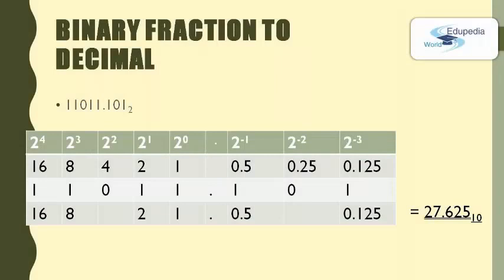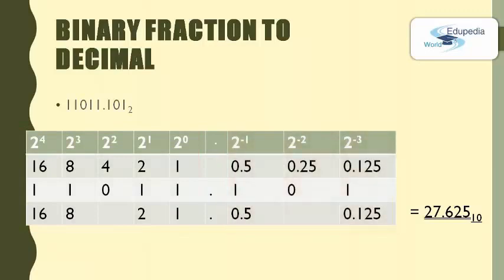Here is another binary to decimal conversion, but this time we have a binary fraction number. There is a small dot in the binary number — we call that dot the radix point. The left side from the radix point represents the integer part, and the right side represents the fractional part. The integer part is handled the same as before, but for the fractional part we use 2 to the power of minus N.